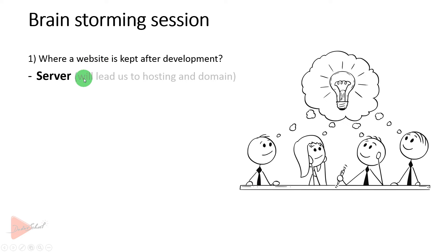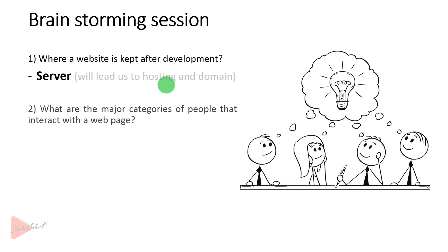The major categories of people that interact with a web page — this is a web page, and people interact with it. The question is about which type of website it is: an e-commerce website, educational platform, or entertainment website. Regardless of the purpose of that particular website, there are major categories of people who interact with it.